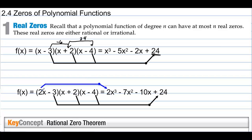Now look at this example. We have 2x minus 3, so if we had the factors of 24 we wouldn't get any fractions out of this. However, one of the zeros here is 3 halves. So we need to take the factors of 24 and divide by the factors of 2 to get all of the possibilities.